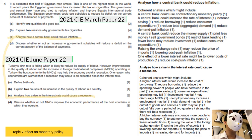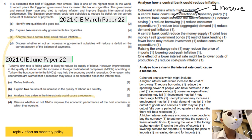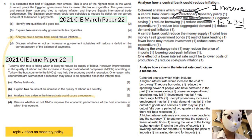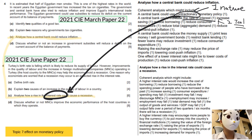When answering this question, first you must name the nature of the policy — in this case it is contractionary. Second, you must name the tool of monetary policy. There are many tools such as buying bonds, but the most common tool you would name is the interest rate.